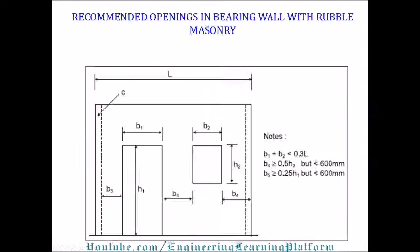Recommended opening provisions in bearing walls with rubble masonry can be found in different codes. This is taken from the Uniform Building Code (UBC) masonry structure provisions, showing minimum and maximum distances between openings and from corners. These provisions must be followed in small structures consisting of stone masonry. I hope the video was informative and useful — please visit the channel for more relevant content, and hit like and subscribe. Thank you for watching.